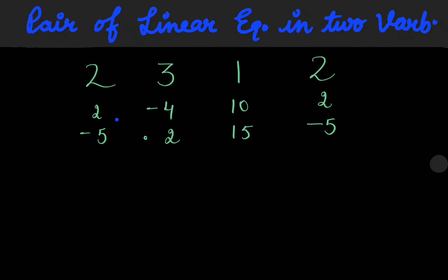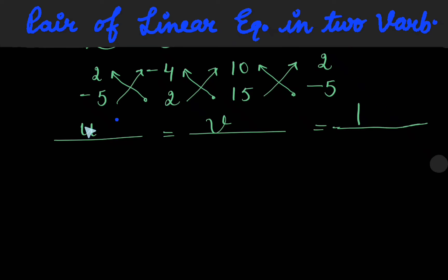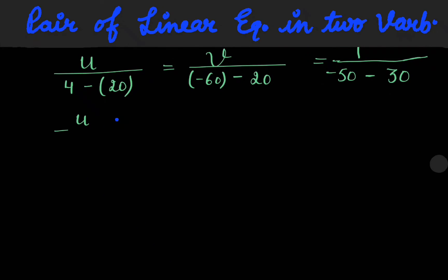We will do cross multiplication from right to left, then left to right, repeating the pattern. So we have u over [blank] is equal to v over [blank] is equal to constant over [blank]. Starting the calculation: 2 times minus 4 minus (minus 5 times minus 4) gives minus 8 minus 20, which is minus 16 (wait — this gives minus 8; 15 times minus 4 is minus 60; the center term: 2 times 10 gives 20; minus 5 times 10 is minus 50; again negative sign applies for 15). This becomes u over minus 16 is equal to v over minus 80 is equal to 1 over minus 80.